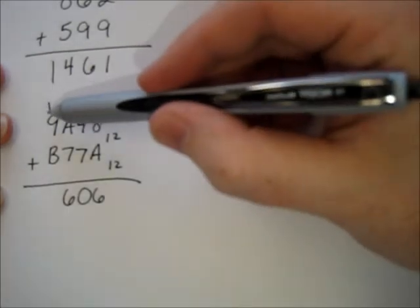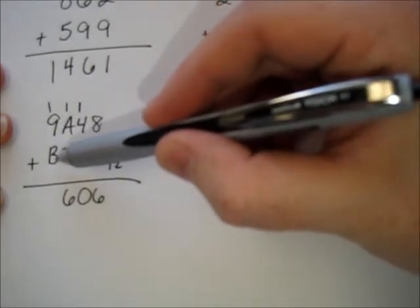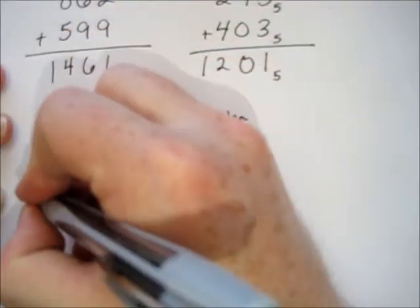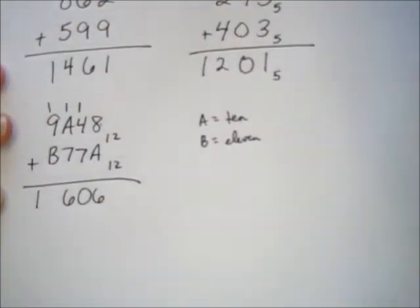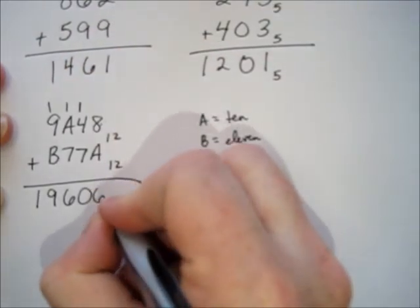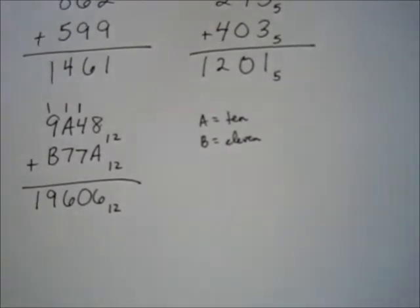And then the last column you have 1 plus 9 is 10, plus 11 is 21. How do you represent 21 in base 12? Well, 12 goes into 21 once. And what's left over? 9. 1, 9, 6, 0, 6, base 12.